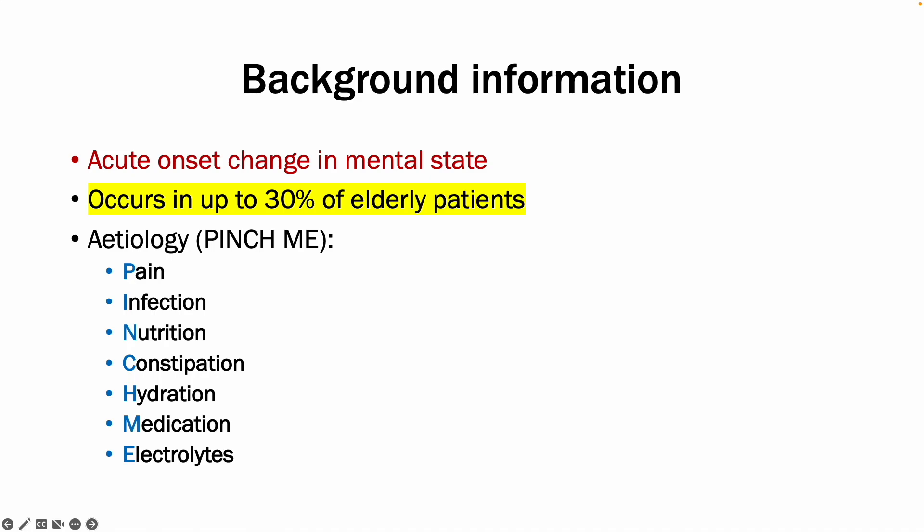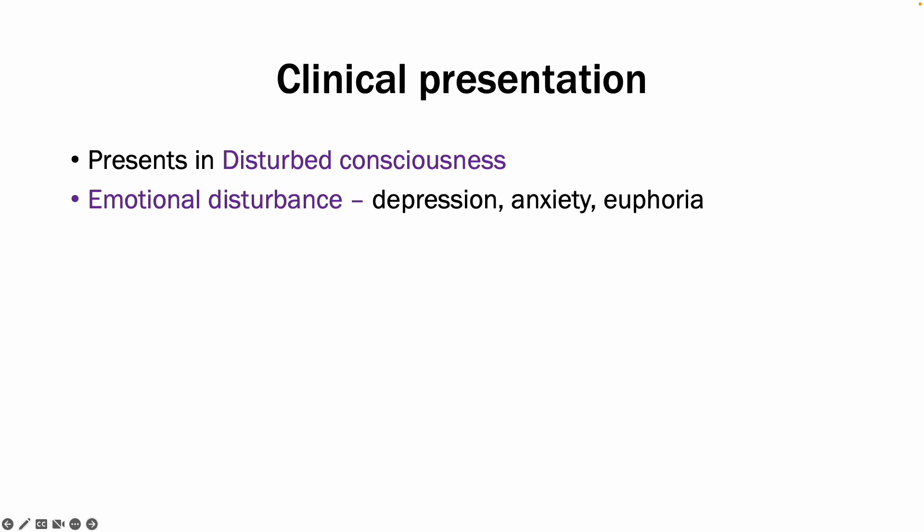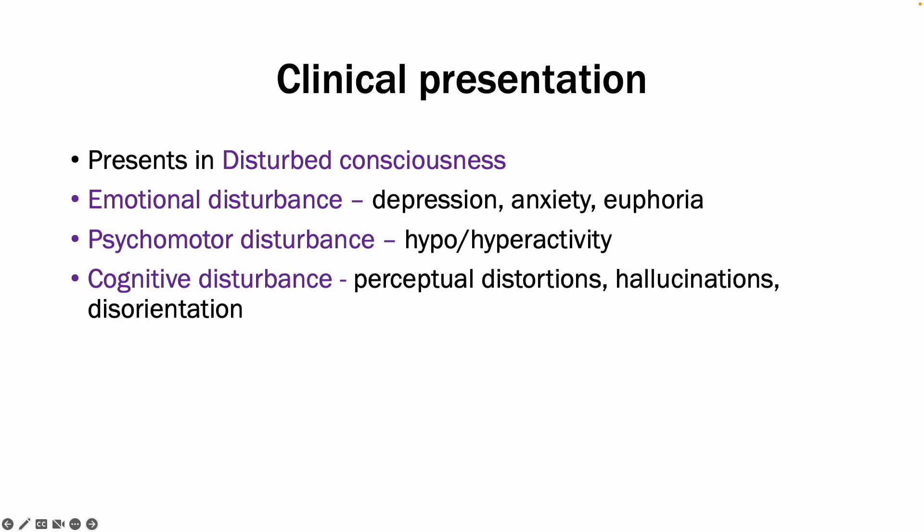But what is the clinical presentation? Well, you have disturbed consciousness. There is emotional disturbance — patients can present with depression, anxiety or euphoria. There are psychomotor disturbances, so patients can be hyper or hypoactive. And you can have cognitive disturbances with things like disorientation and hallucinations. A key point is that there is a disturbed sleep cycle in patients with delirium.